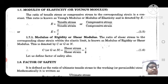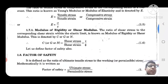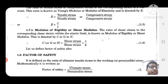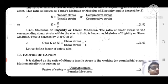Another one is the modulus of rigidity or shear modulus. The ratio of shear stress to the corresponding shear strain within the elastic limit is known as the modulus of rigidity or shear modulus. It is denoted by capital C, capital G, or capital N. Shear stress is represented by tau and shear strain is represented by phi.